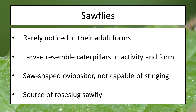We often confuse sawflies with caterpillars because their larvae resemble caterpillars very heavily — they will consume plant material and look just like a caterpillar, like a cabbage looper. However, they are very different. Sawflies are the primary source of the rose slug sawfly, which is especially important for rose growers. If you see window painting on the surface of rose leaves — where leaf tissue has been worn away so you can almost look through it but one layer remains — that's being done by a rose slug sawfly.